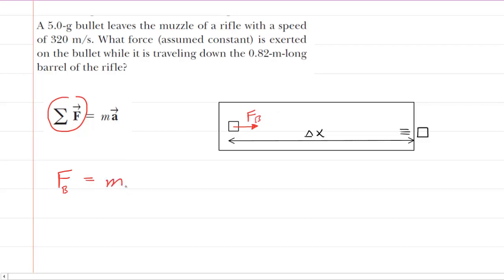And we need two things. We need the mass of the bullet times the acceleration of the bullet. Now of course we have the mass already although do note we're going to have to convert that into kilograms later on. But what's missing is of course the acceleration of the bullet. We're not going to be able to get the force until we get the acceleration.